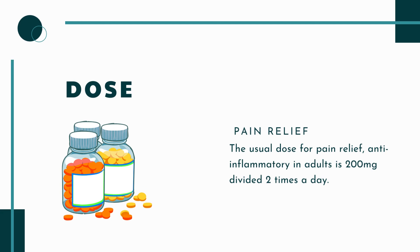For dosage, the usual dose for pain relief and anti-inflammation in adults is 200 mg divided into 2 times a day: 100 mg in the morning and 100 mg in the evening, taken after meals to avoid stomach upset. It is not recommended for use in children under 18 years of age due to no clinical data. For the elderly, the lowest possible dose should be used for the shortest possible time, with regular monitoring of digestive side effects. The dosage form should be an enteric-coated tablet, and the drug is not recommended for use in pregnant and lactating women.